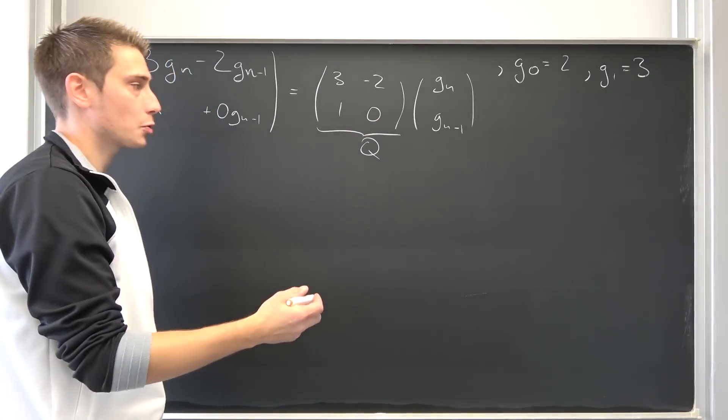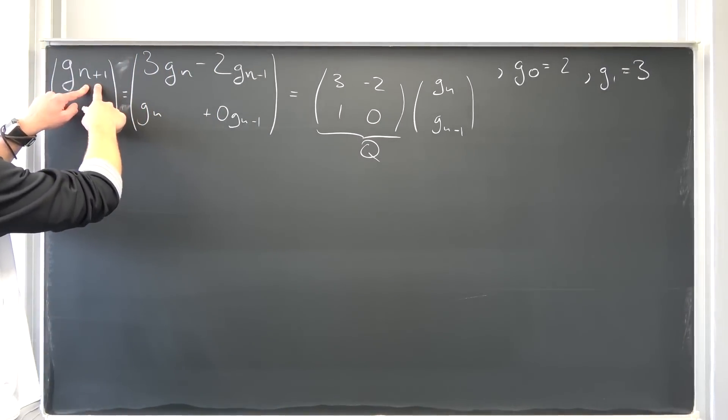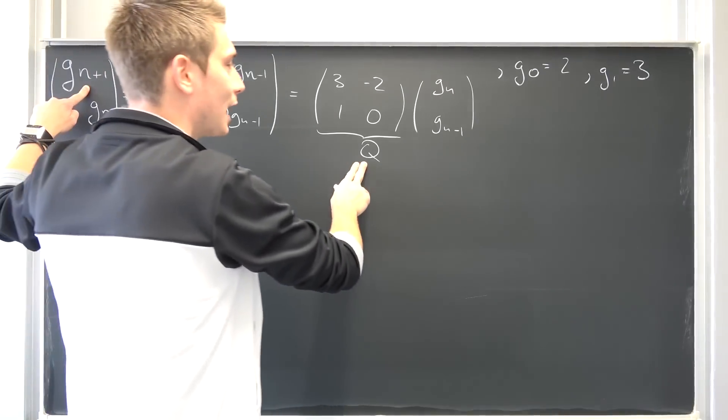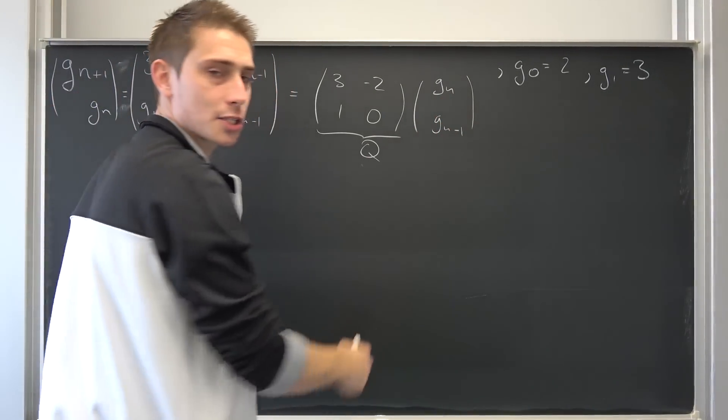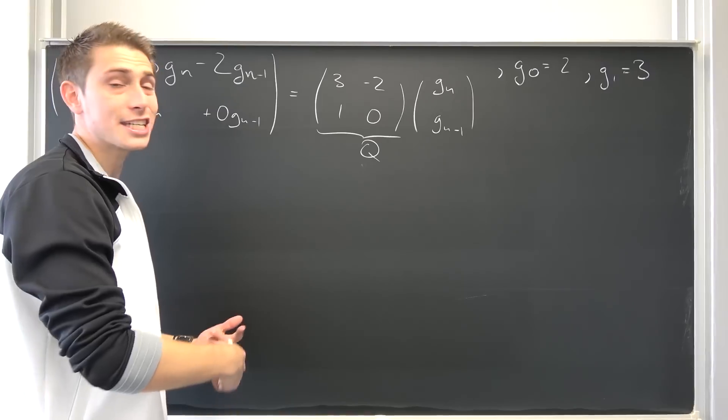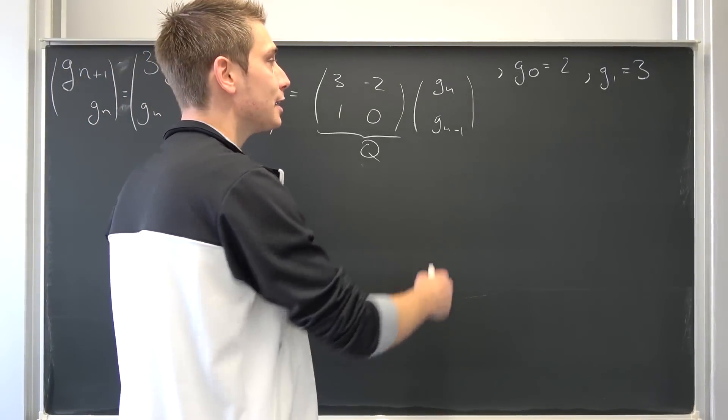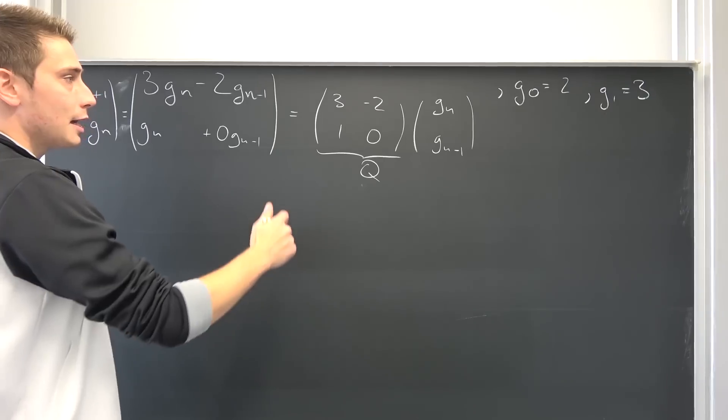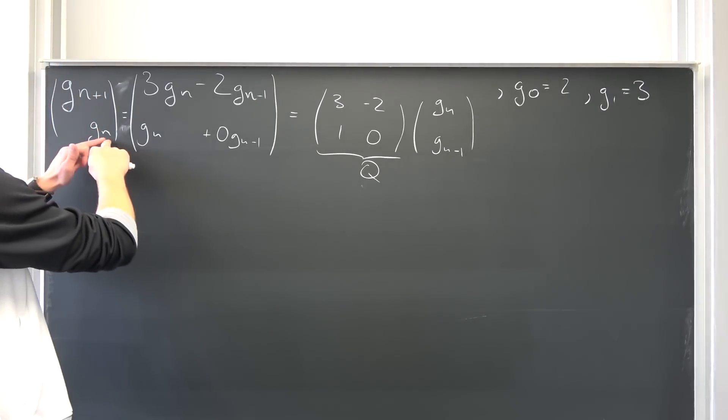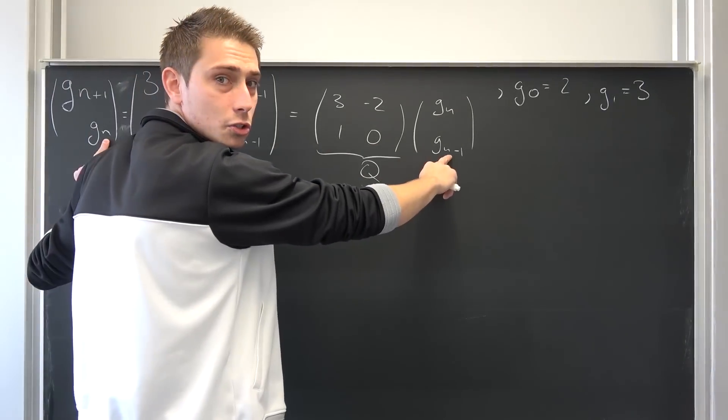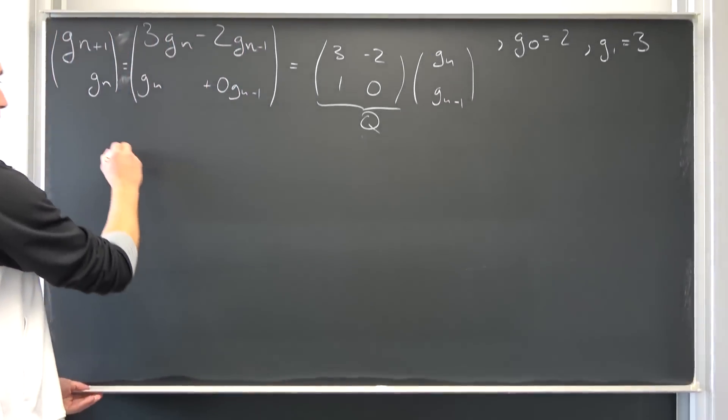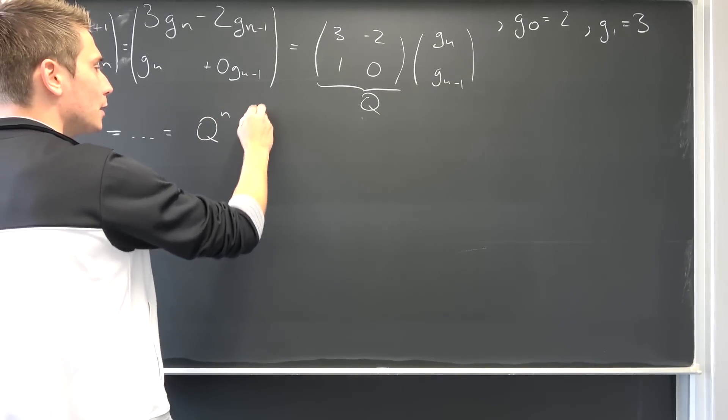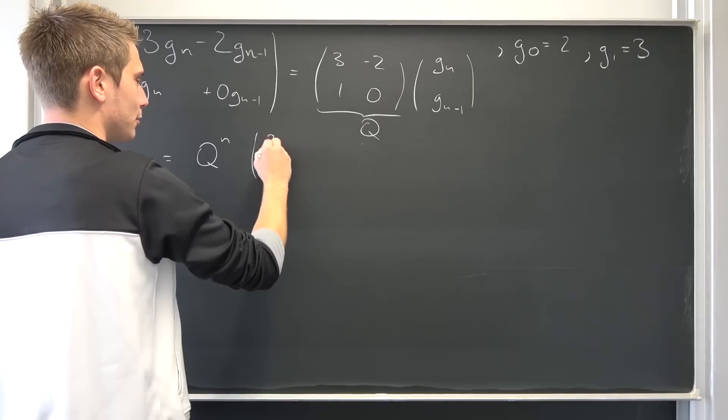Now, this is a recurrence relation and what we can do is we can actually make a change of index. So let n go to n-1. Then we would end up with Q times g_n-1, g_n-2. And we can do this n iterations, plug all of those new recurrence definitions in to get to our initial value problem with the vector g_1, g_0 at the end. Meaning to get there, we have to do n iterations. n minus n is going to result in 0.